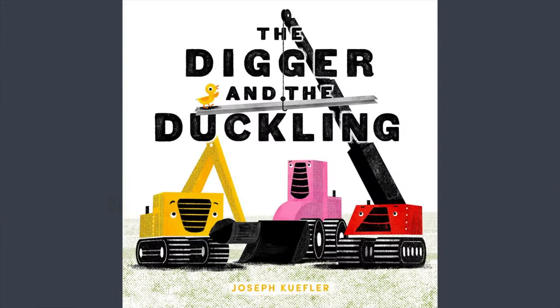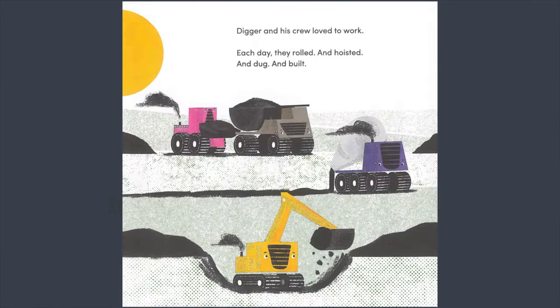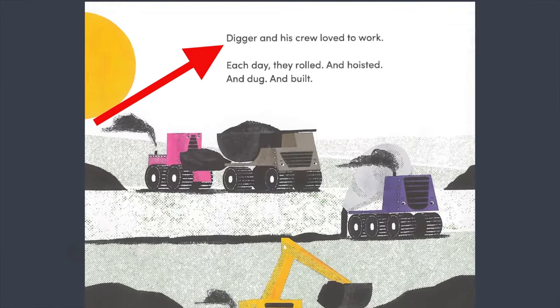Let's look at some examples from our book. What color is Digger? Yellow. The answer is right there in one spot. What do Digger and his crew love to do? They love to work.